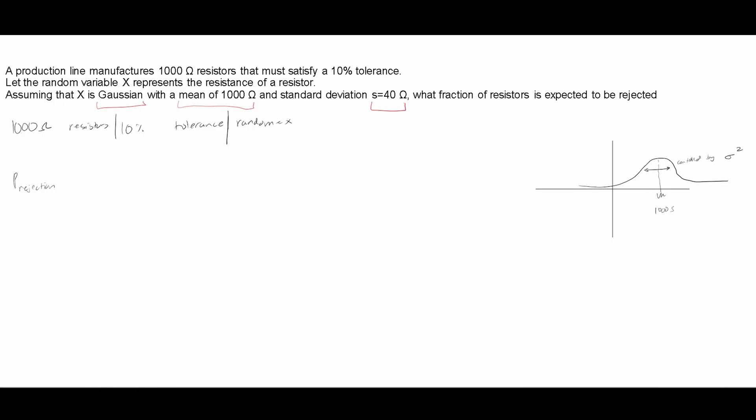This mean is going to be 1,000. It tells us this. So 1,000 ohms of resistance. 10% in either direction is either going to be the probability that X is less than 900, or the probability that X is greater than 1,100.